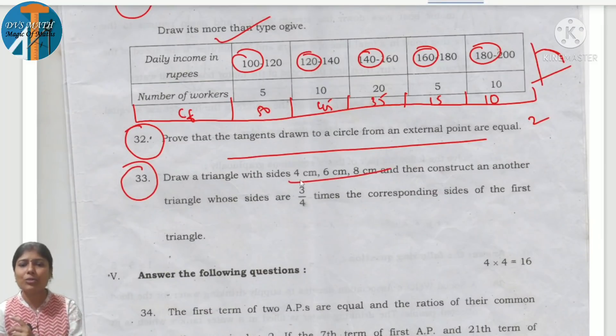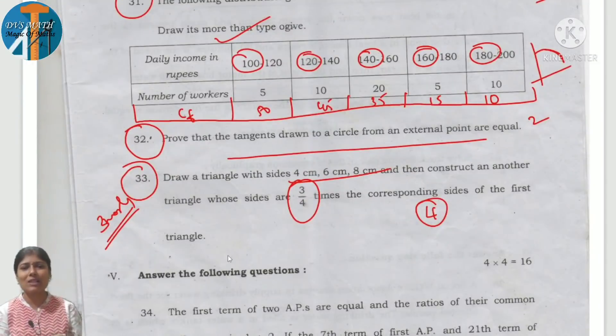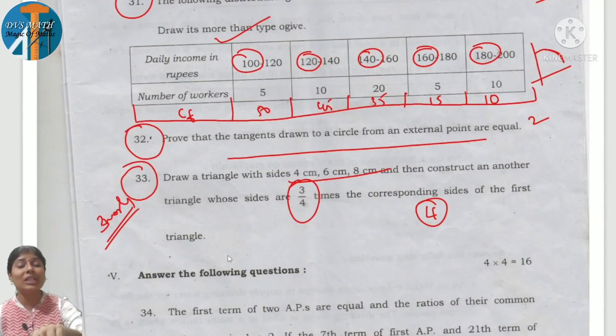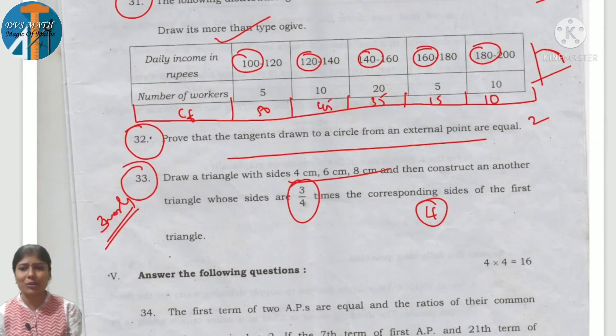Observe question 33. Generally they give 3 by 4 ratio. Here they gave 3 marks actually, but this time you have 4 marks. One mark increased. So compared to 2020, you have one extra. Carefully, the 2 marks dividing line segment is not there. Now you are going to add that one. Maximum marks in construction.